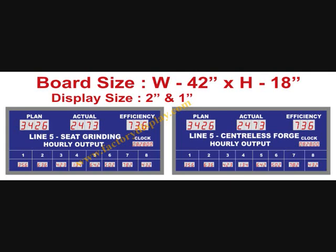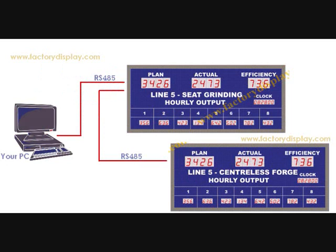Once this is done, the board retains in its memory the settings and then increments the plan based on the cycle time which is programmed. The actual count comes in either as a potential-free contact from your side, or can come as a voltage, or as a digital input from your side. Efficiency is calculated as actual divided by plan, into 100.